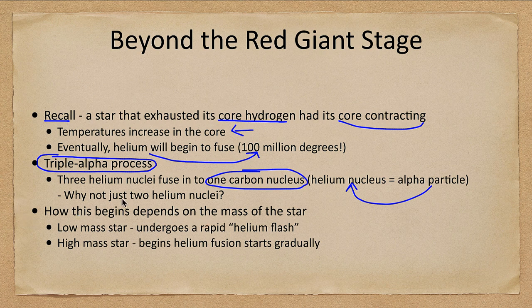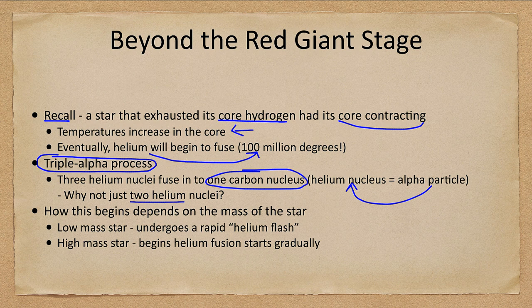Three helium nuclei fuse together to make one carbon nucleus and release energy, much as fusing hydrogen into helium does. You might wonder why not just two helium nuclei — if two helium nuclei fuse they form an unstable element that immediately breaks apart, so you need essentially three to hit simultaneously to form a stable carbon nucleus. That's why we need such incredibly high temperatures, so they're moving fast enough and the density is high enough.